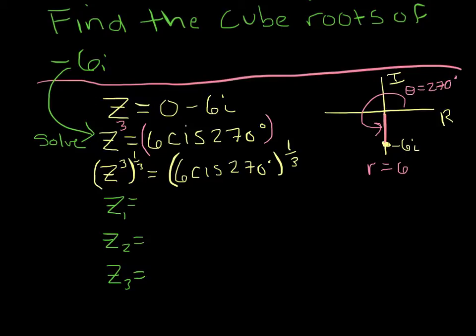So my three answers are going to be right here. And so we know that by De Moivre's theorem, 6 cis 270 to the 1/3 is the same as 6 to the 1/3, cosine of 270 times 1/3 plus i sine of 270 times 1/3. 270 divided by 3 is 90 degrees. So our first answer would be 6 to the 1/3 or the cube root of 6 cis 90.